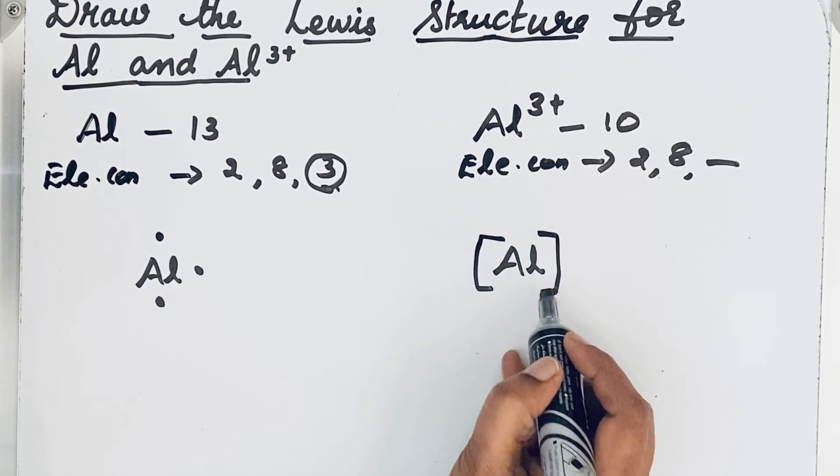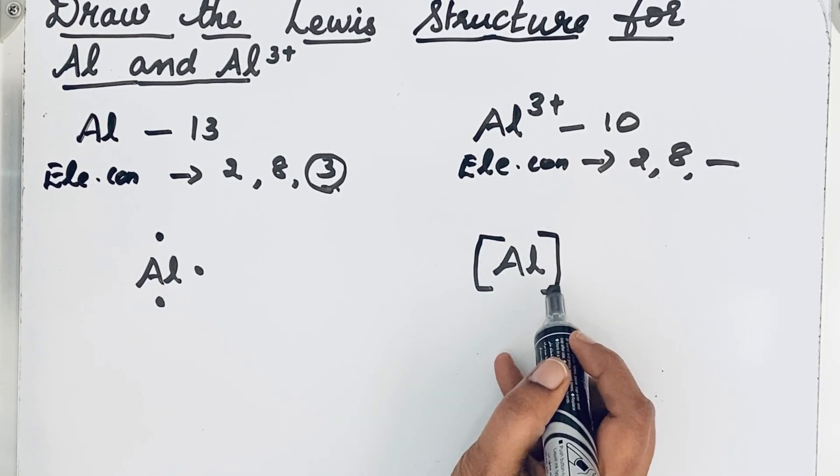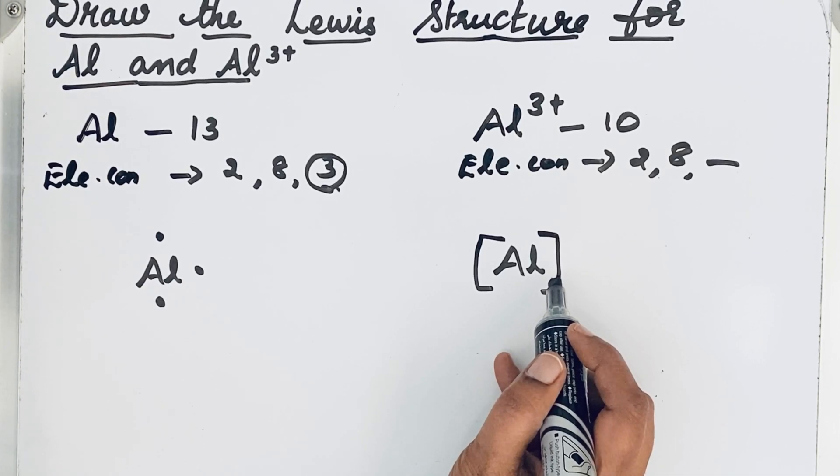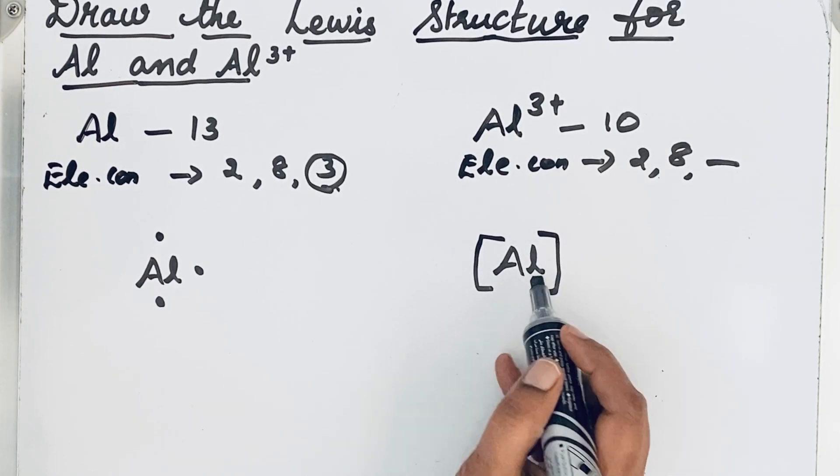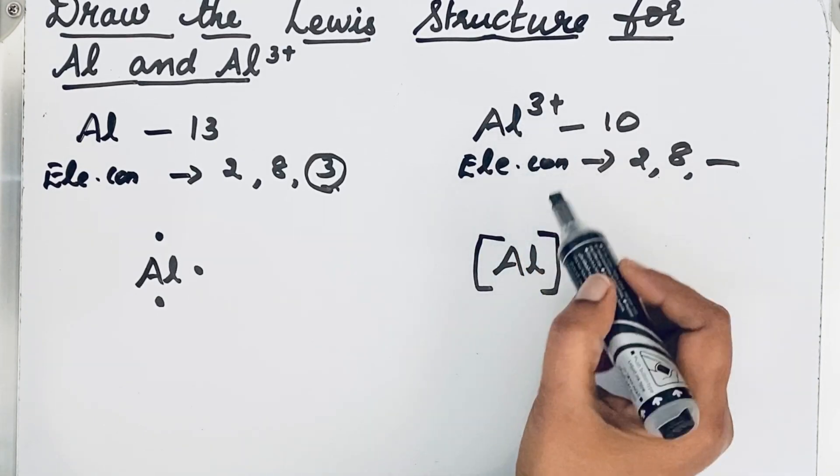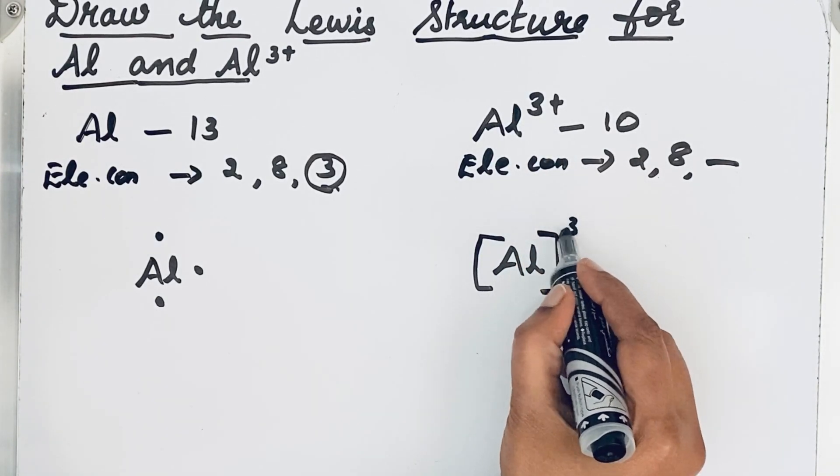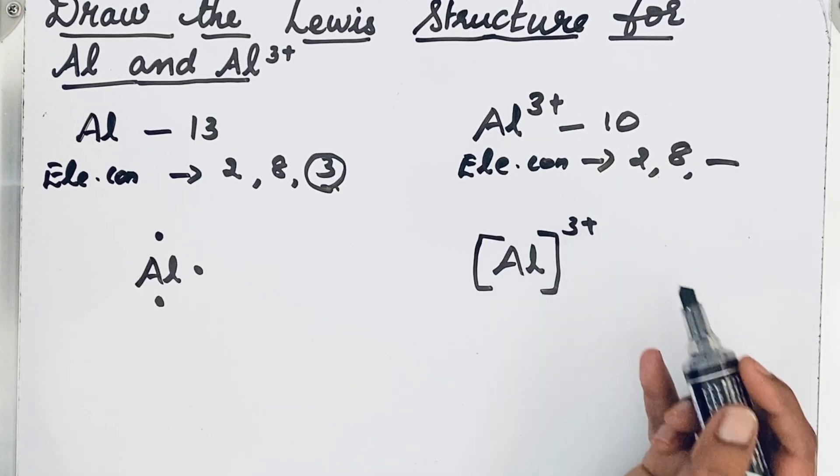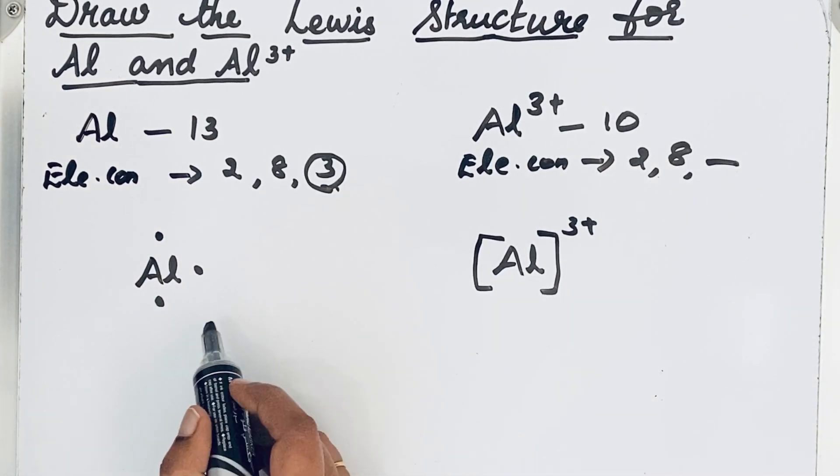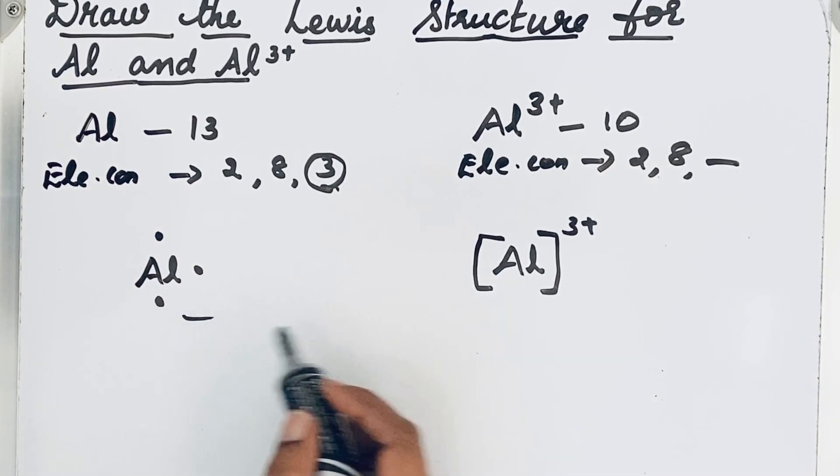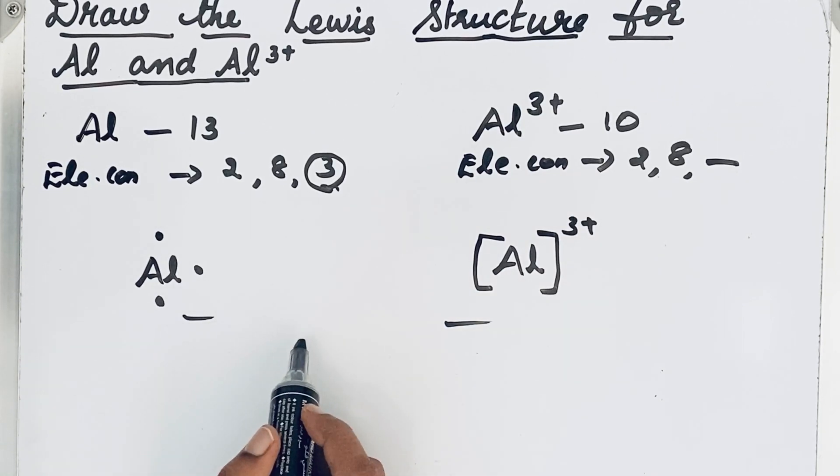After that, we are enclosing it by a bracket, because whenever we have ions - cations or anions or polyatomic ions - we enclose by brackets. Then after that, the charge we should write in the topmost side: 3+. This is the Lewis dot structure of aluminium and aluminium ion. Thanks for watching.